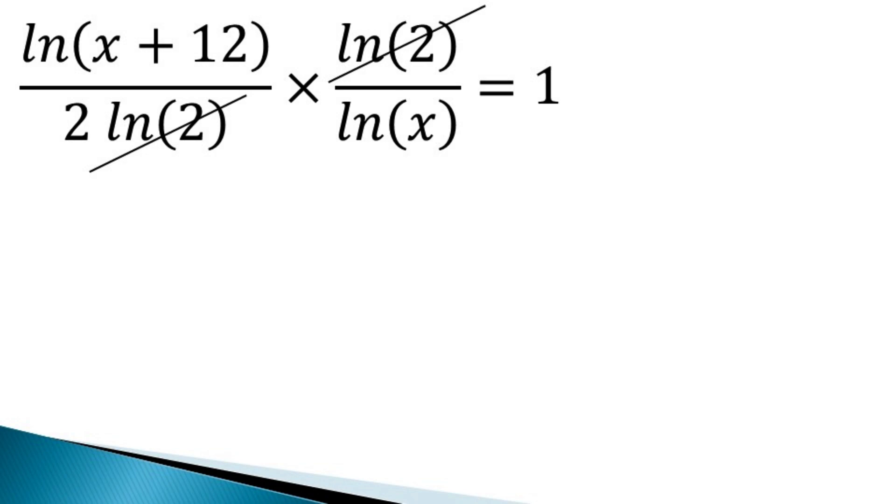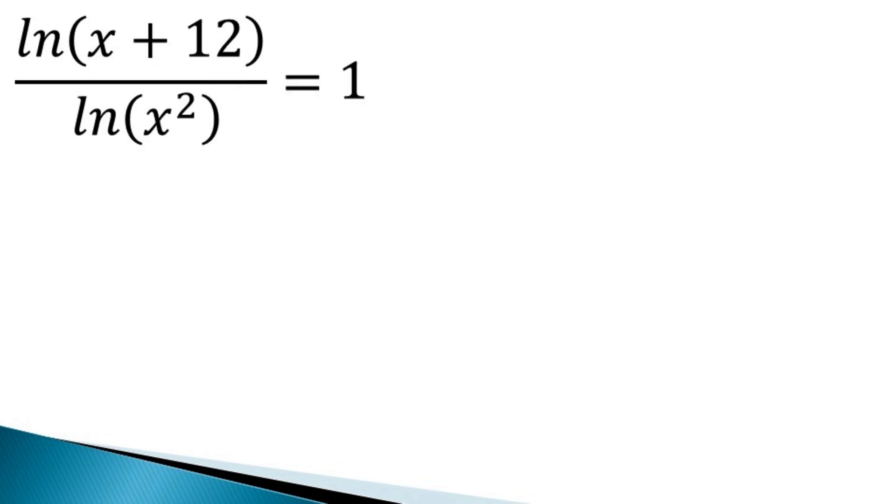And we get an equivalent equation as ln(x + 12) divided by 2 ln x. Again, we use the power law in 2 ln x to get ln x square in the denominator.